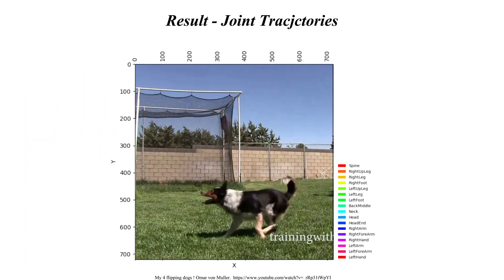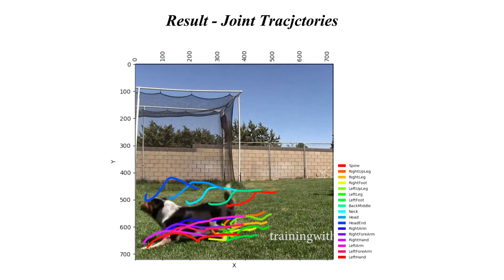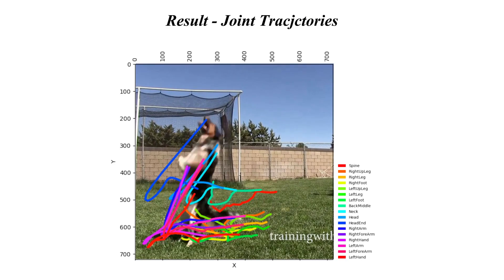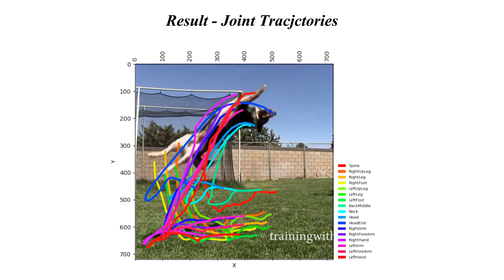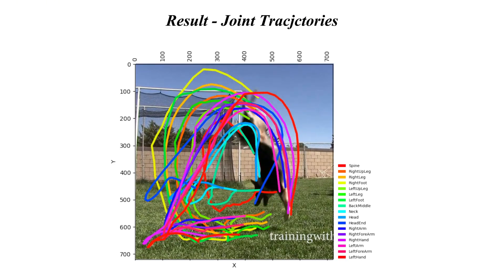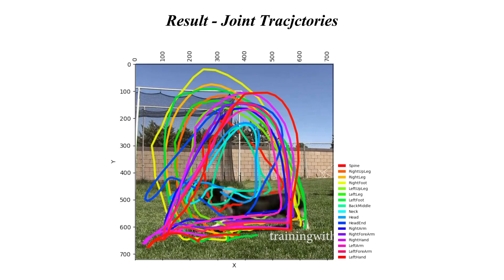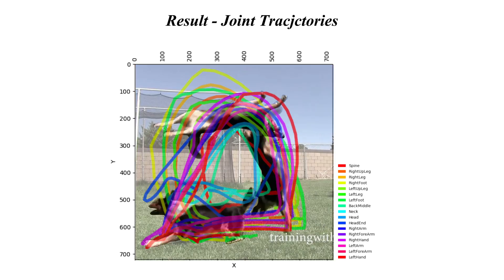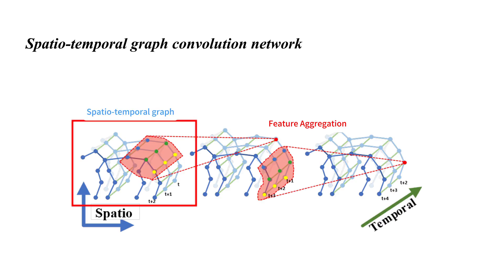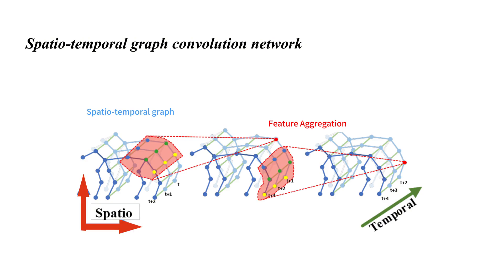Additionally, we introduce a novel joint tracking algorithm to precisely estimate joint positions and trajectories, significantly enhancing the accuracy of 2D skeleton estimation. We construct a graph to represent the pose estimation results, adopting the skeleton of objects as spatial dimensions and joint position changes as temporal dimensions.